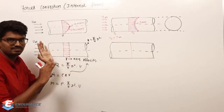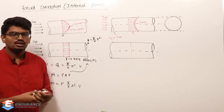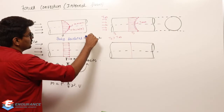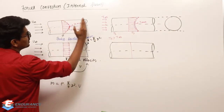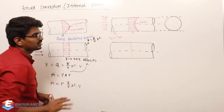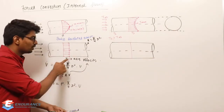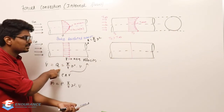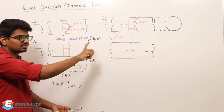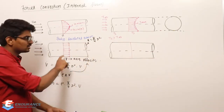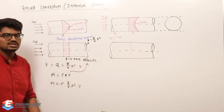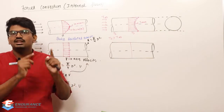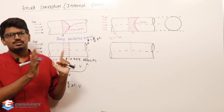Once the fully developed region is reached, the velocity profile remains constant - it does not vary along x. Since the velocity profile doesn't vary, the average velocity is also constant. With constant diameter, area πR² stays constant, discharge stays constant, so average velocity V does not change with respect to x in fully developed laminar or turbulent flow.